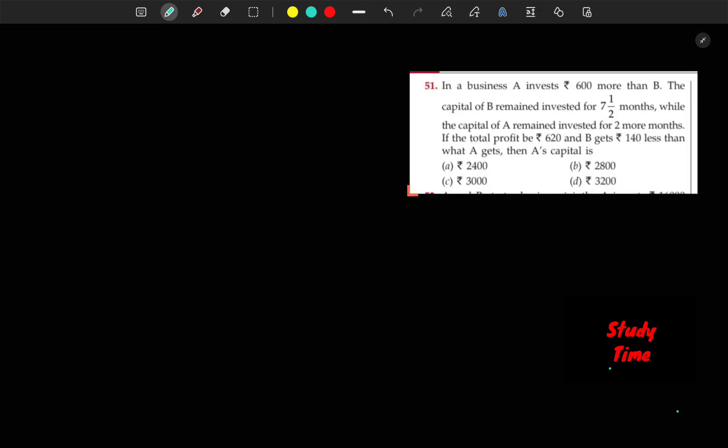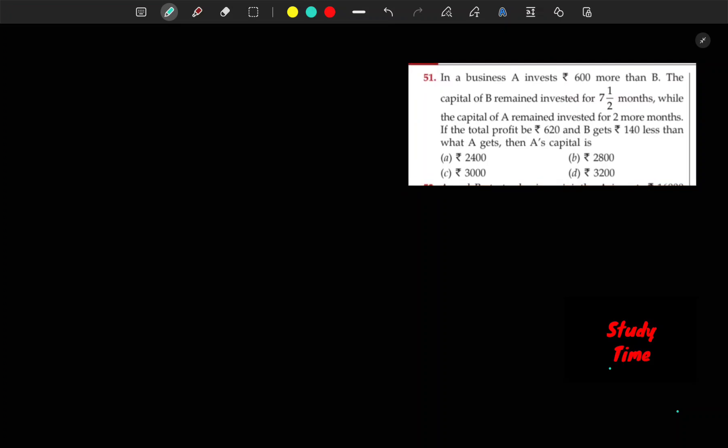In a business A invests 600 more than B. The capital of B remained invested for 7 and a half months while the capital of A remained invested for 2 more months. If the total profit is 620 and B gets 140 less than what A gets, then A's capital is?